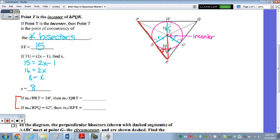Then find the measure of QRT. So that would also be 24, because T is the incenter, and this segment right here is an angle bisector. So the measure of QRT is 24 degrees.